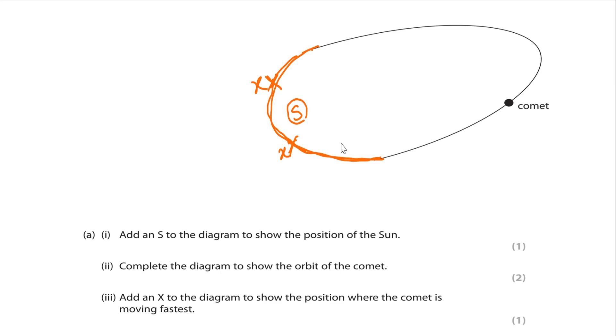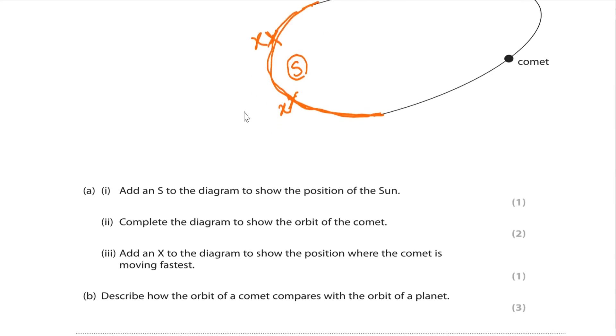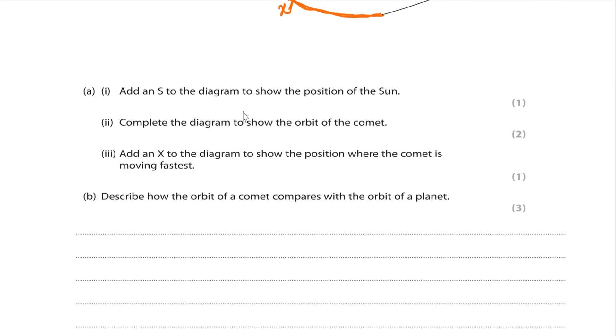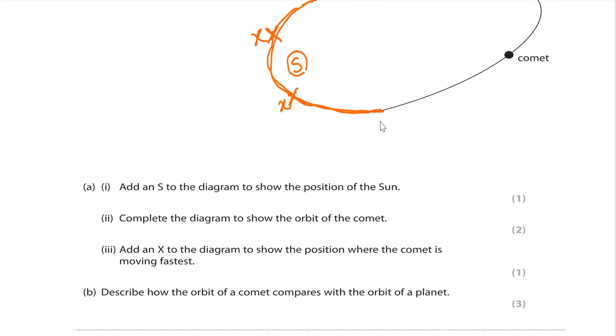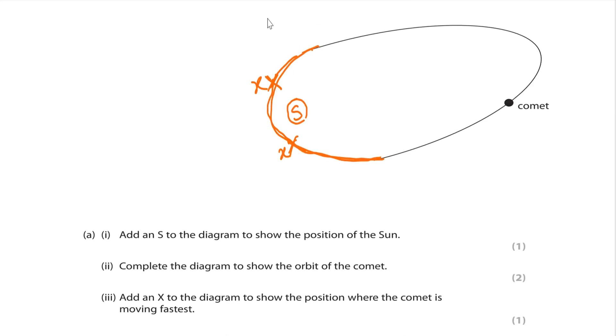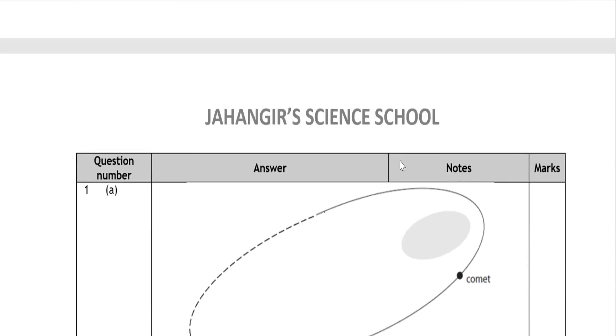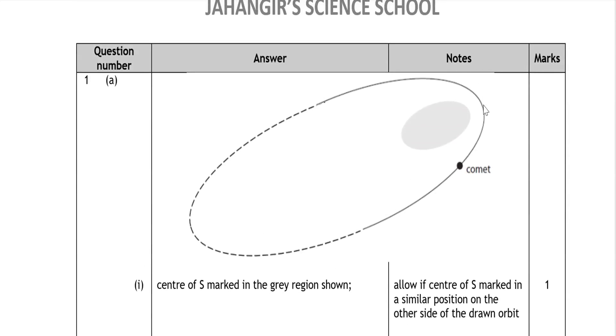Speed of the comet depends on the gravitational force. Describe how the orbit of the comet compares with the orbit of the planet. Orbit of the comet is elongated elliptical orbit, on the other hand, a planet revolves around the Sun in a circular orbit. Check the mark scheme.